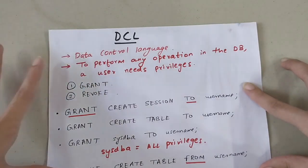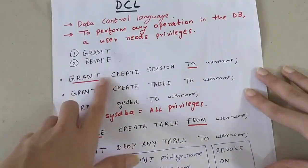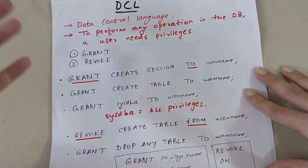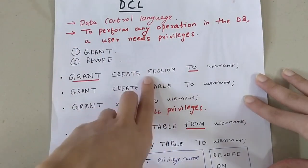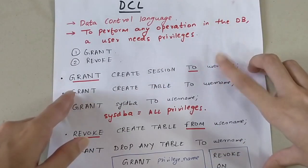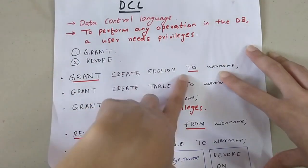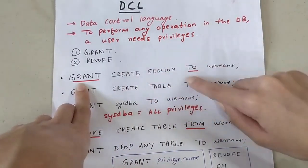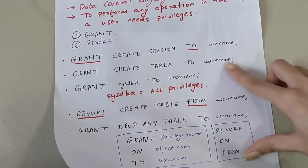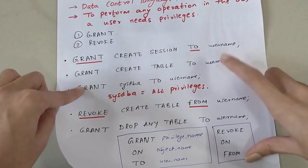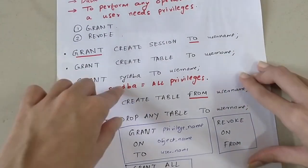Examples of GRANT: GRANT CREATE SESSION TO username — the user can create sessions. GRANT CREATE TABLE TO xyz — the xyz user is allowed to create tables in the database. GRANT SYSDBA TO username — SYSDBA gives all privileges, so instead of listing operations one by one you can use SYSDBA.